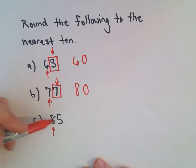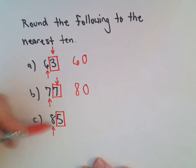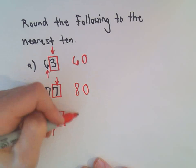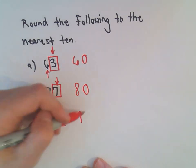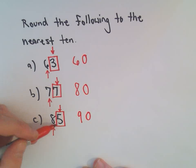Last but not least, 85. I look at my number 5. Again, the rule says if it's 5 or larger, we round up. So I'm going to increase it by 1. So I'm going to increase the 8 to a 9. And again, everything else to the right turns into zeros. So my 85 has now been rounded up to 90.